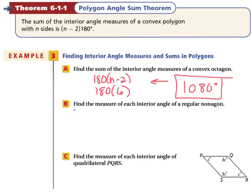Find the measure of each interior angle of a regular nonagon. A nonagon has 9 sides, so we take 180 × (9−2) = 180 × 7 = 1,260 degrees. But that's the sum of all interior angles. Since all angles are equal, we divide 1,260 by 9, giving each angle a measure of 140 degrees.